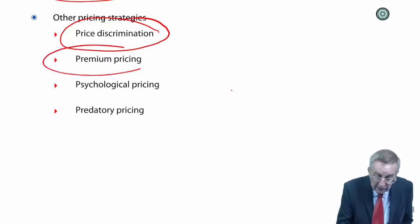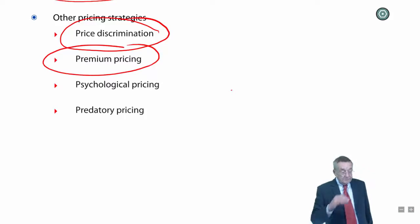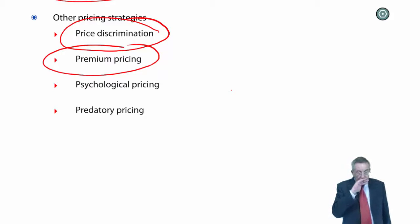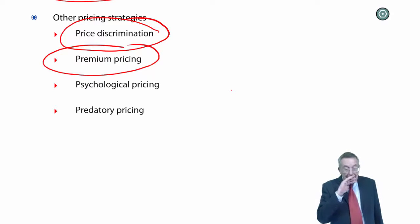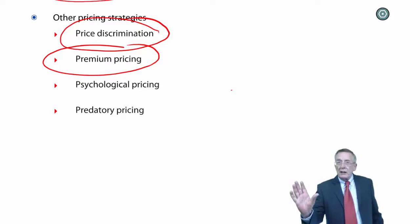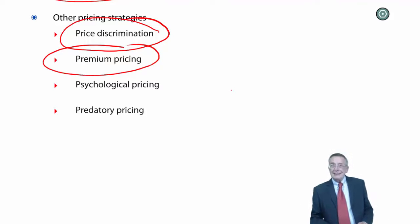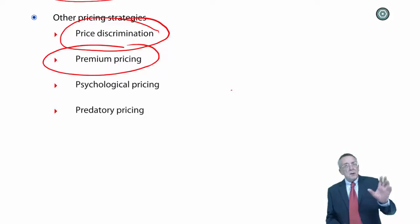Next one, premium pricing. This is a clever one. If you go into a shop, I'm sorry, you're probably bored with coffee, but I'll choose coffee again. If you go to a supermarket, and you see one jar of coffee is priced at a dollar, and next to it is another one priced at five dollars, which one do you assume is better?